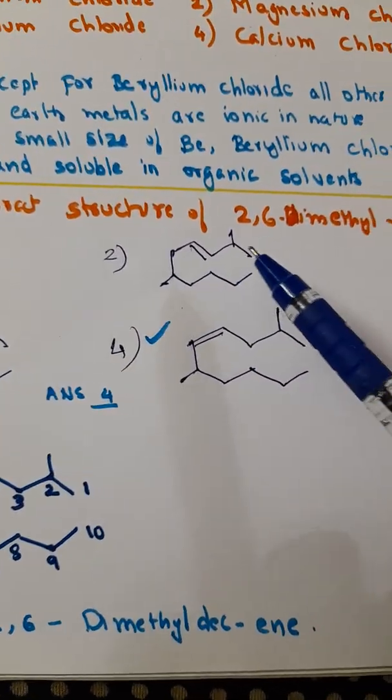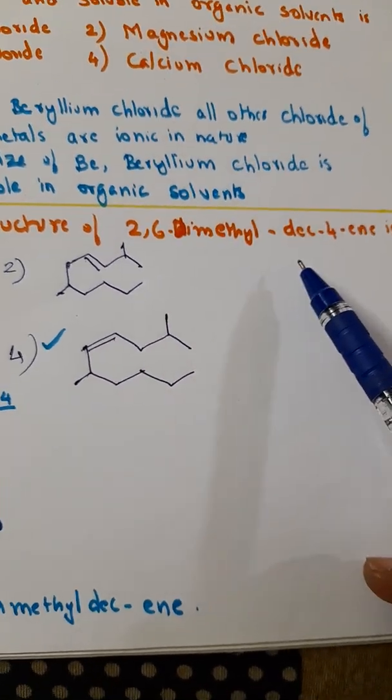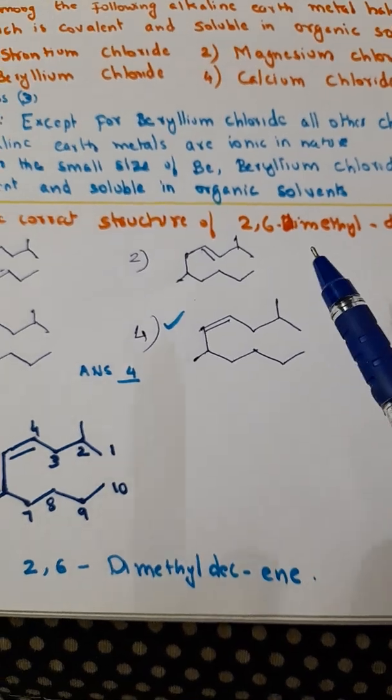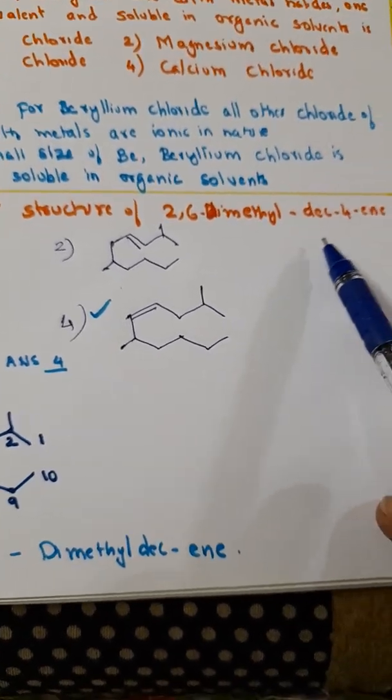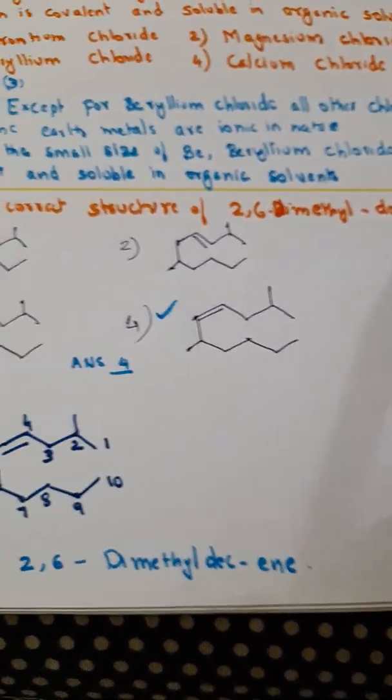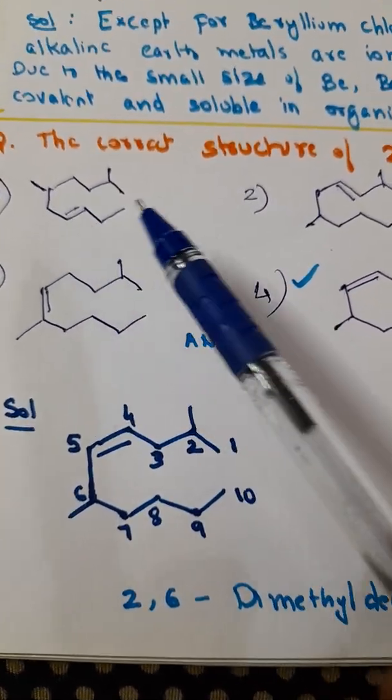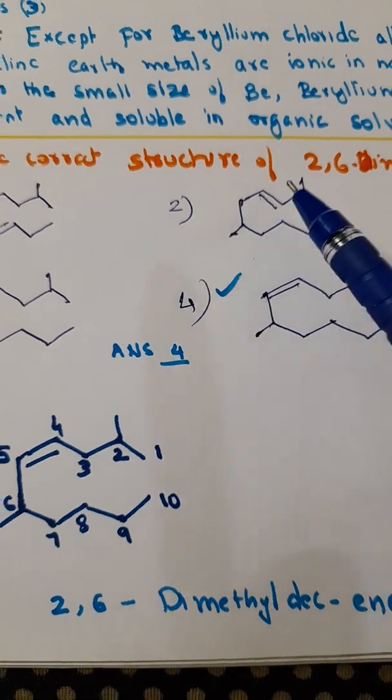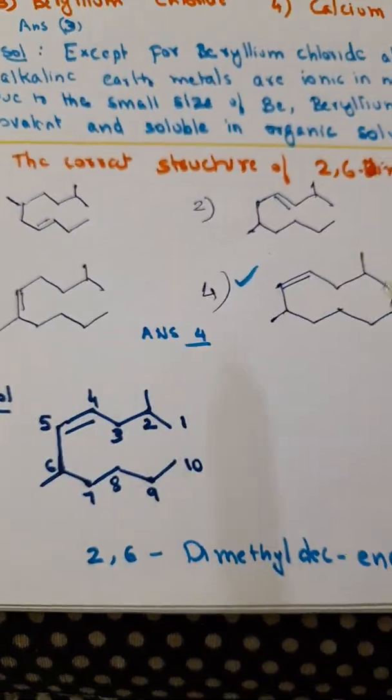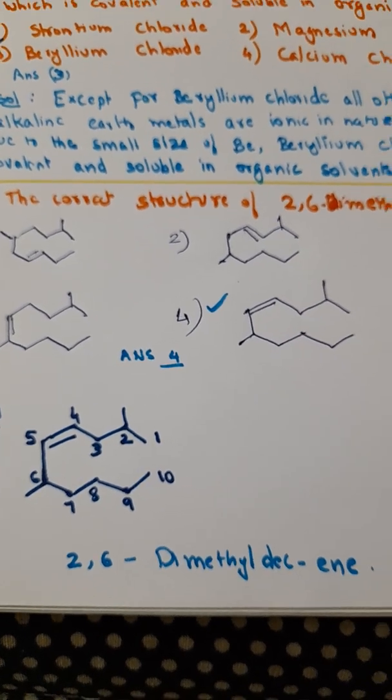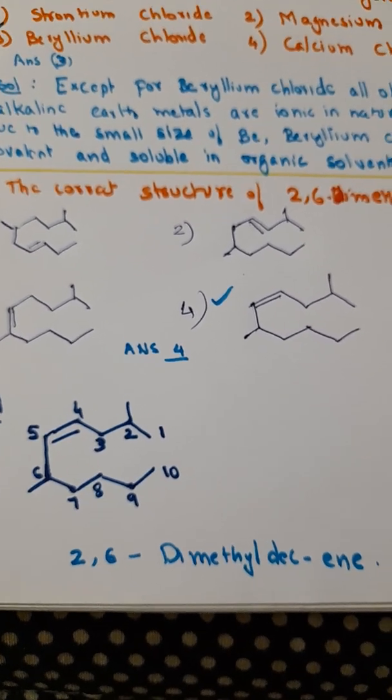Moving on to the next question. The correct structure of 2,6-dimethyldec-4-ene. The options are - see option number 1, see this line indicates a double bond. Here double bond is here, then here, here. In all four cases it is a double bond. It should be an alkene.